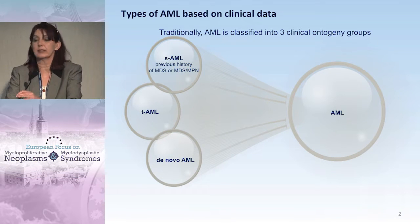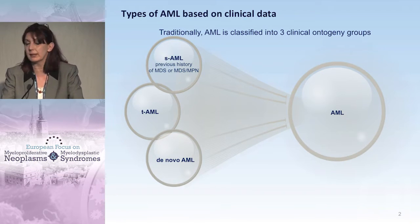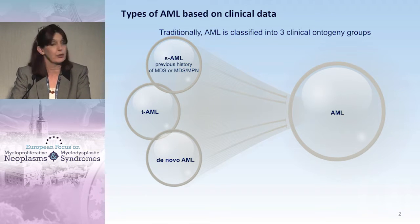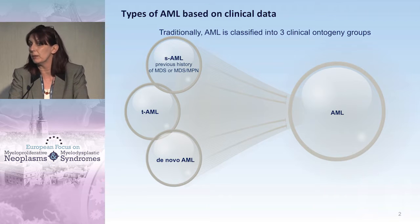Traditionally, we clinically divide AML according to clinical data into the classical secondary AML if we have a history of MDS or MPN. And if the patient had any kind of chemotherapy or radiation, we call it therapy-related AML, and if none of these two exist, we consider the patient to have a de novo AML. We know very well that there are differences in terms of prognosis and survival, as patients with secondary AML or therapy-related AML do have an inferior survival compared to patients with de novo.